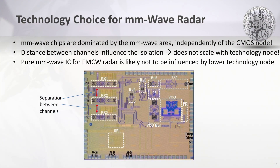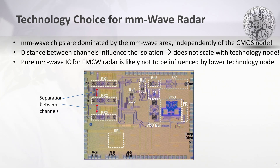Millimeter wave chips are dominated by RF area independently of the CMOS node. The distance between the channels influences isolation and does not scale with the technology node. Additionally, the distance between the channels can be determined by the separation of the balls on the package. Therefore, using a pure mmW IC for FMCW is likely not to benefit from a lower CMOS technology node. A combination of a BiCMOS front-end for the mmW part and a CMOS digital baseband can therefore be a reasonable approach.